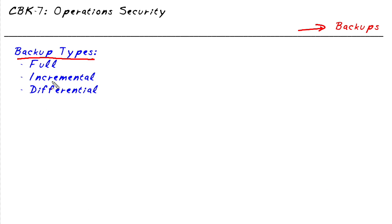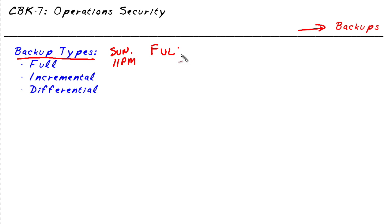They are full, incremental, and differential. And here's how they can be used. We could, for example, on Sunday at 11 p.m., go ahead and make a full backup. And a full backup is just what it implies — everything. We're backing up all the data.